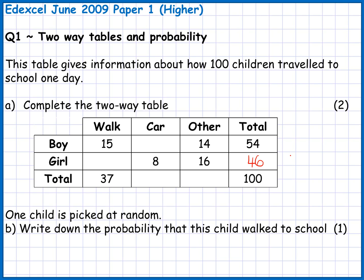Then look for the next easy numbers. In the other mode of transport column, I've got 14 boys and 16 girls, so altogether 14 and 16 makes 30.